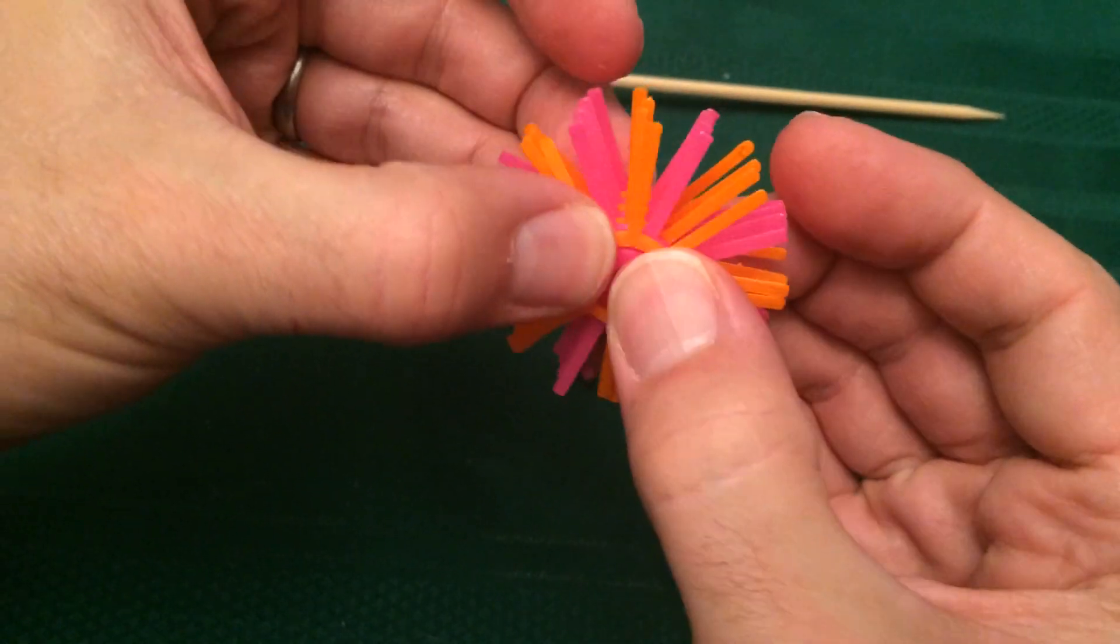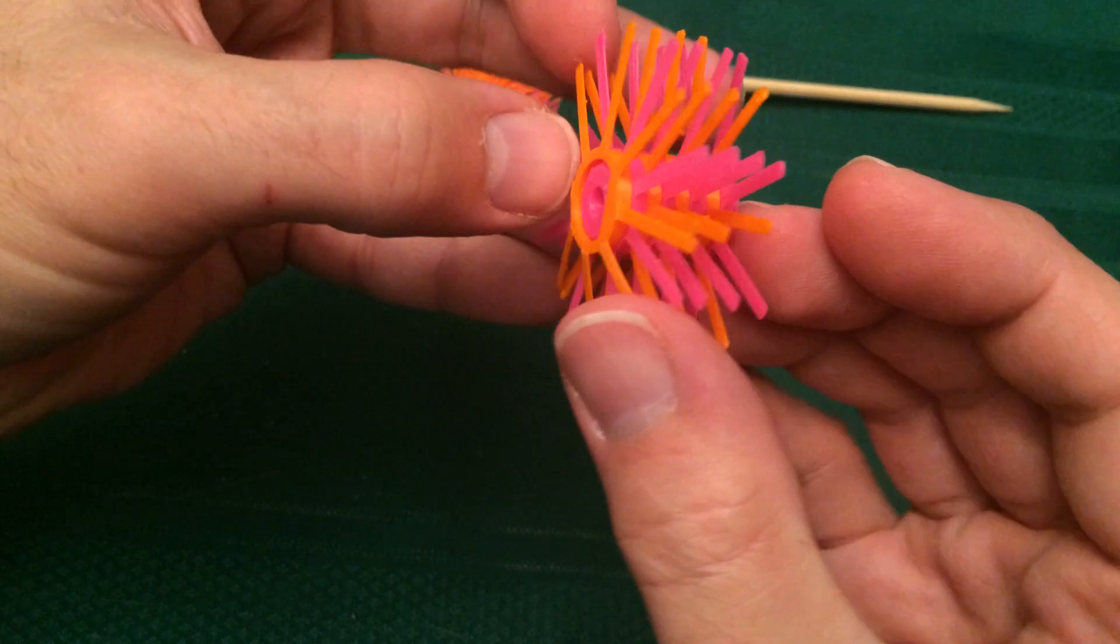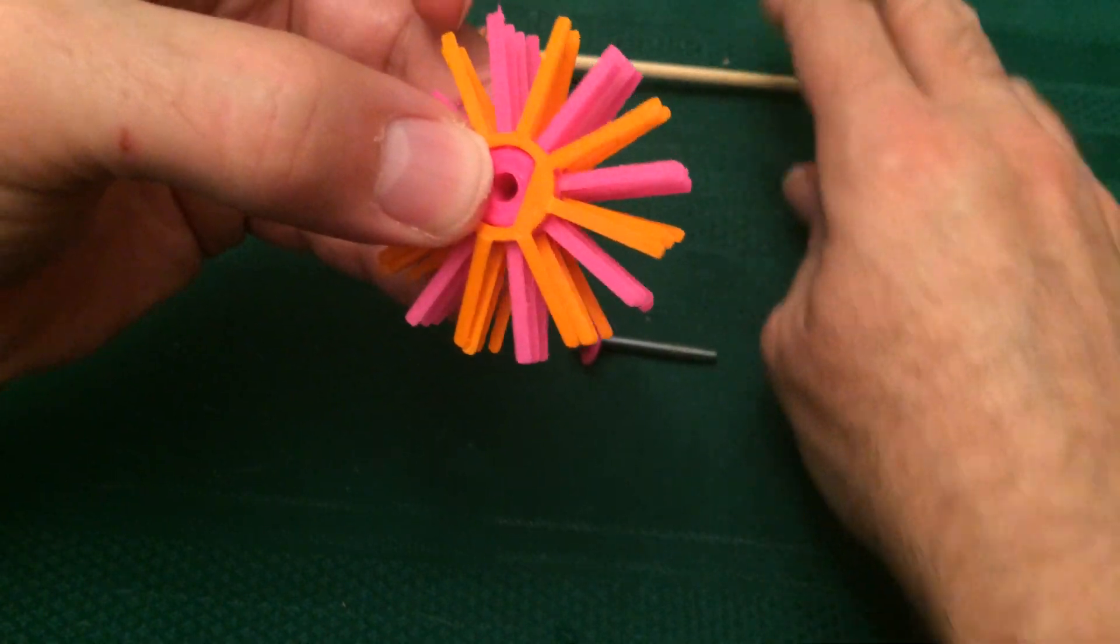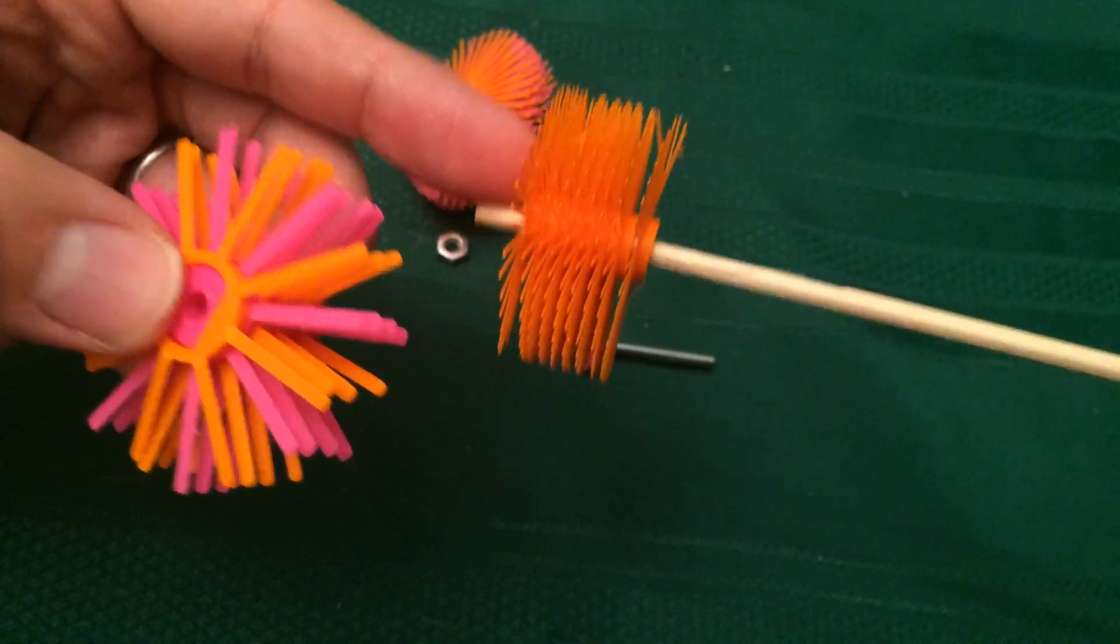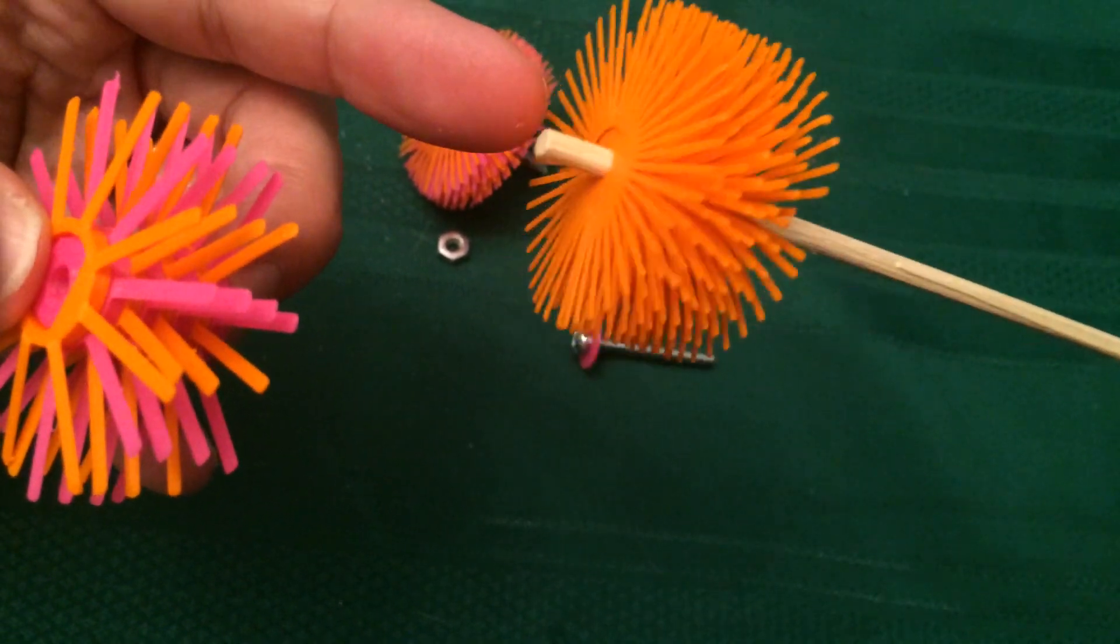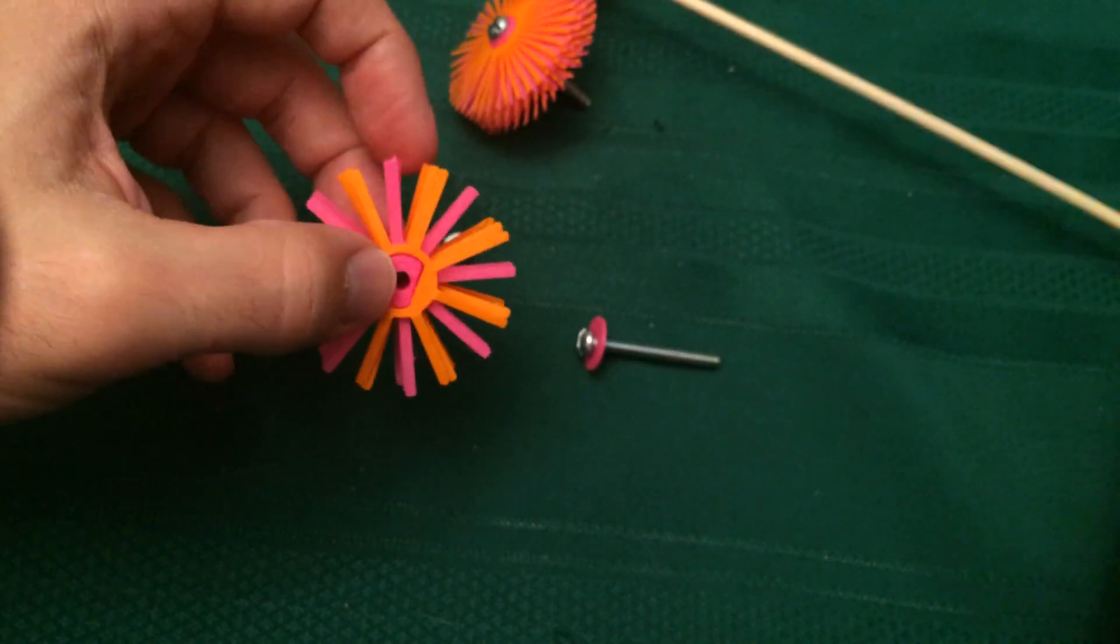You don't need to print the center part if you don't want to. You can just stick them right on like this. I just put these right on a bamboo skewer.